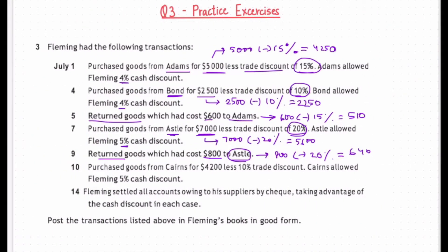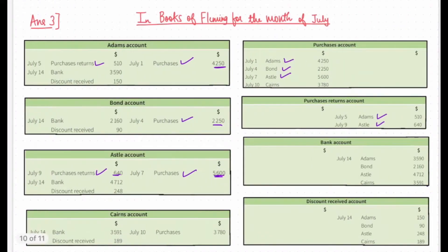July 10th — purchased goods from Cairns for $4,200 less a 10% trade discount, and Cairns allowed Fleming a 5% cash discount. The purchase cost will be $4,200 less 10% of $4,200, which will be $3,780. This will be recorded by the entry Purchase account debit to Cairns. In Purchases account, Cairns account will be debited, and in Cairns account, Purchases will be credited.